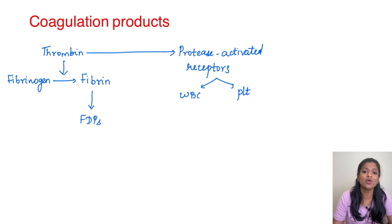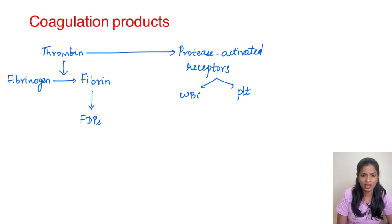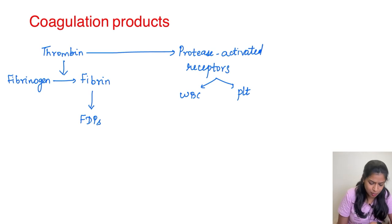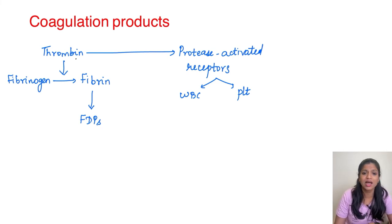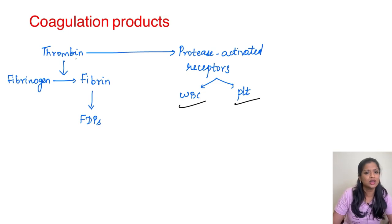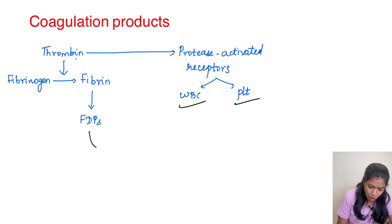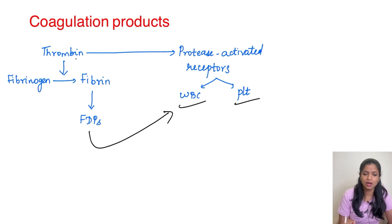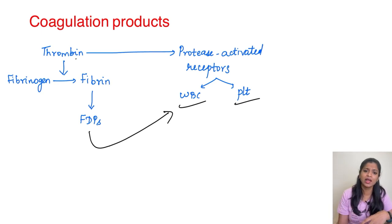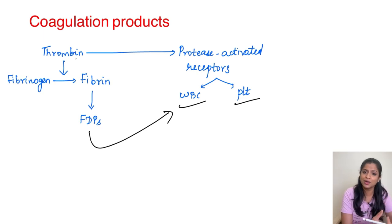Moving on to coagulation products. There is a very close link between the inflammatory pathway and the coagulation cascade. Fibrin, the final product of the clotting cascade, is produced from fibrinogen by thrombin and degrades into fibrin degradation products. Thrombin activates protease-activated receptors on WBCs and platelets, and fibrin degradation products also activate WBCs. Vessel injury triggers both platelet aggregation with fibrin clot formation and an inflammatory response — so coagulation and inflammation always go hand in hand.